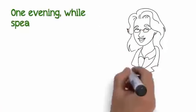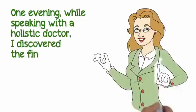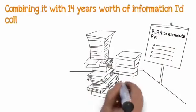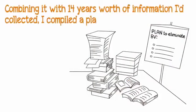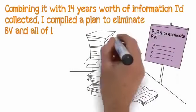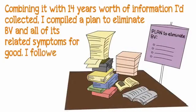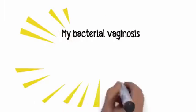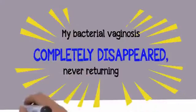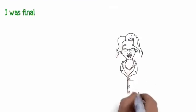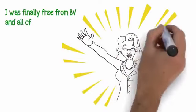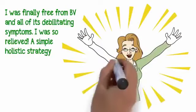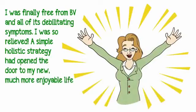One evening while speaking with a holistic doctor, I discovered the final piece of the puzzle. Combining it with 14 years worth of information I'd collected, I compiled a plan to eliminate BV and all of its related symptoms for good. I followed this plan for three weeks and finally my bacterial vaginosis completely disappeared, never returning again. I was finally free from BV. A simple holistic strategy had opened the door to my new, much more enjoyable life.